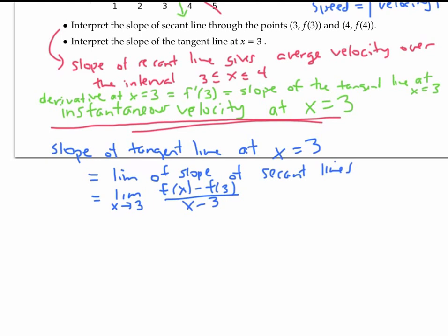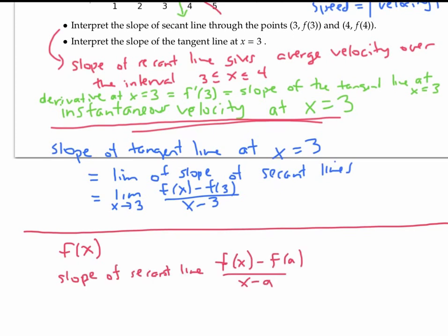More generally, if f of x represents any quantity that's changing, then the slope of the secant line represents an average rate of change, while the slope of the tangent line, f prime of a, represents an instantaneous rate of change.